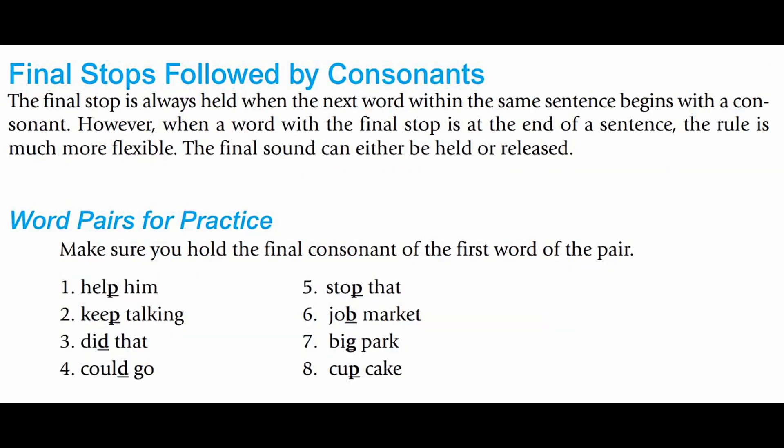Final Stop Followed by Another Consonant. The final stop is held when the next word within the same sentence begins with another consonant. However, when the final stop is at the end of the sentence, this rule is much more flexible. Sometimes the sound is released, as in 'the house is big,' or it's held. However, you wouldn't say 'this is a big house' with a released g. Instead, you would hold the g sound of the word big and say 'this is a big house.'